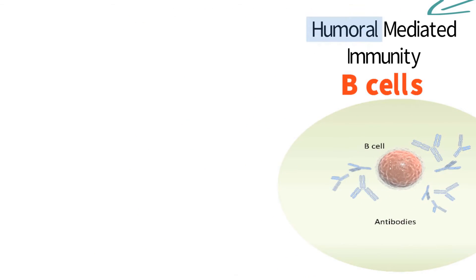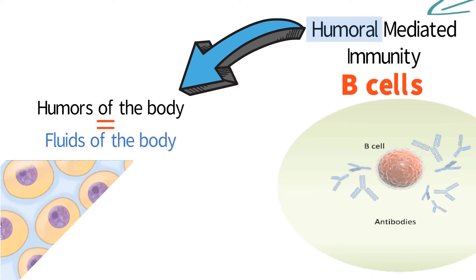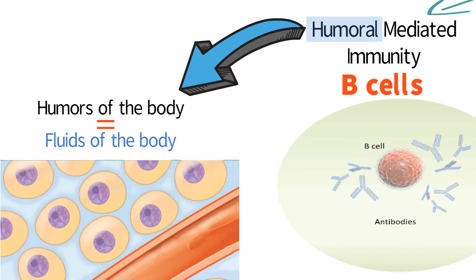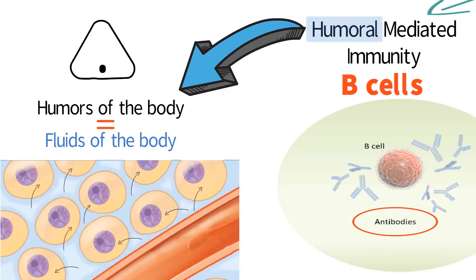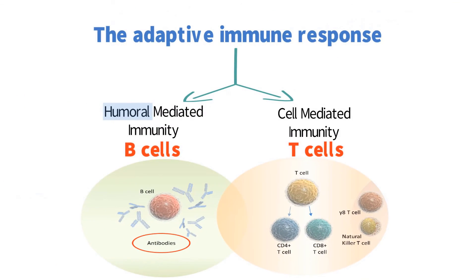Humoral is Old English, referring to the humors of the body, meaning the fluids of the body. B cells are able to provide immunity in the humors, or fluids of the body, because B cells secrete antibodies to circulate throughout the blood and other fluids of the body. If an infection has reached the inside of a cell, humoral-mediated immunity will not be effective. This is why cell-mediated immunity exists.